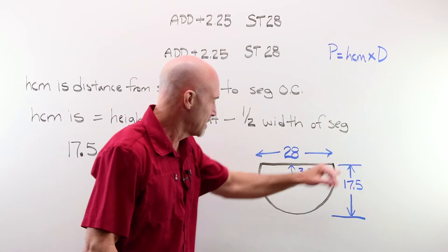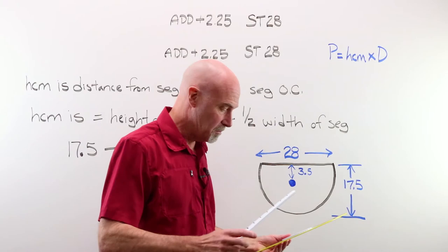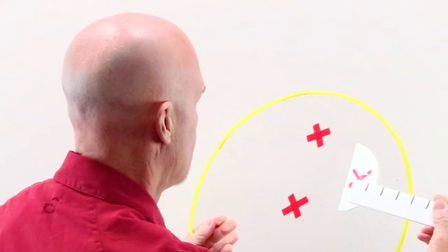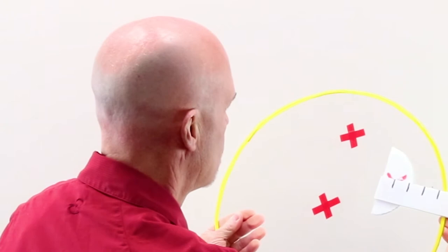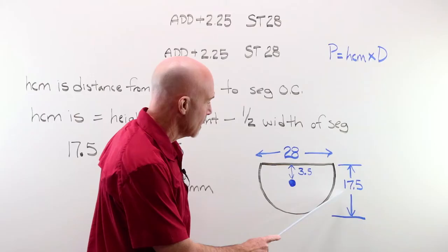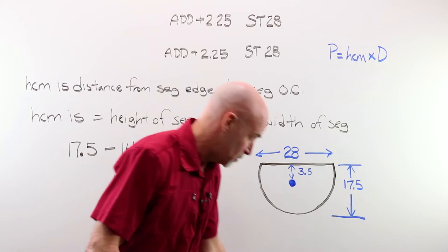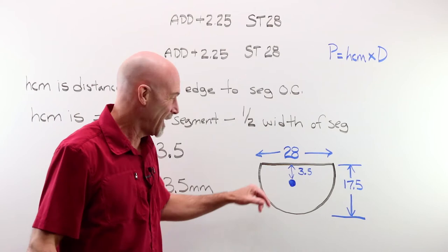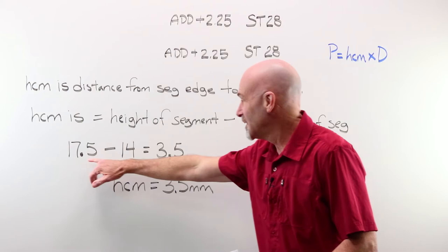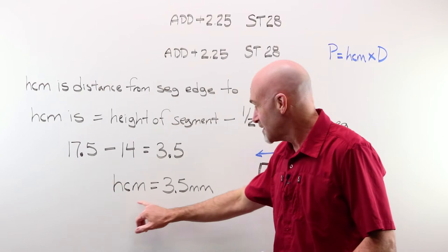HCM is the height of the segment minus half the width of the segment. So if you take a Straight Top 28 and you take your millimeter ruler and you measure from the base to the top of the segment, you get 17.5 millimeters. Obviously a Straight Top 28 is 28 millimeters wide. So if I have my height of 17.5 and half of my 28 is 14, if I subtract this to it end up with an HCM of 3.5 millimeters.